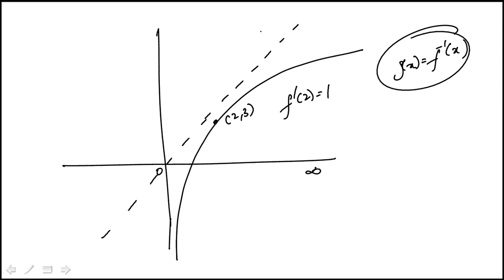So it's going to look something like that. So if we look at this point (2, 3), the corresponding point on the inverse function will be (3, 2).